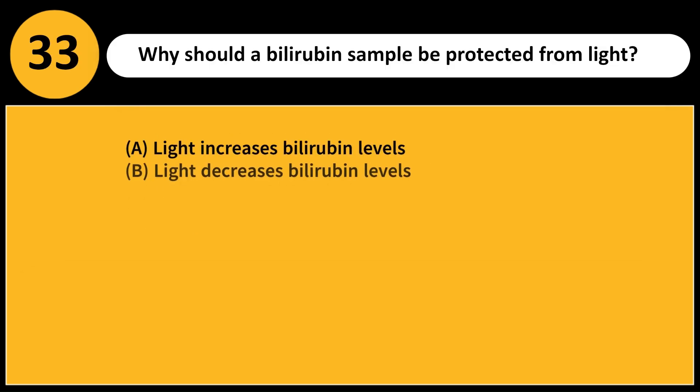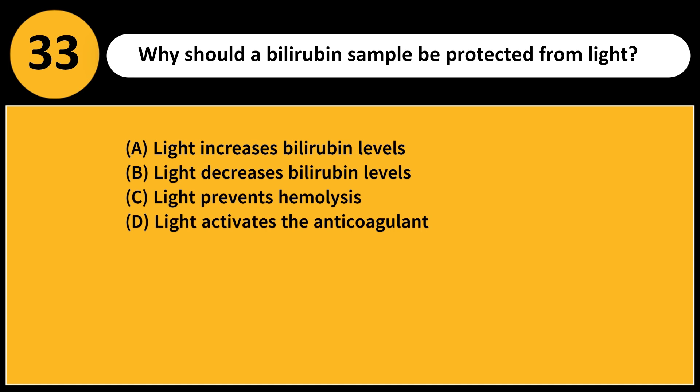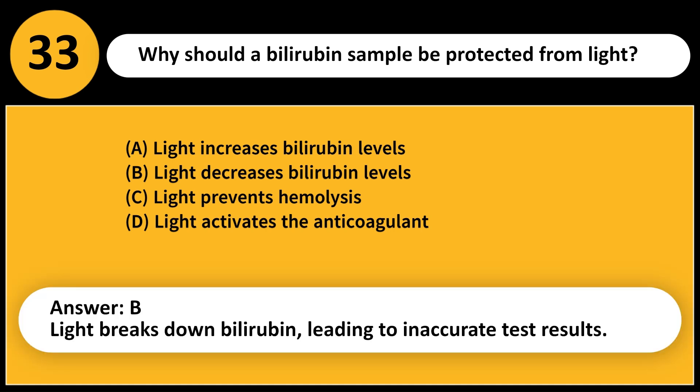Why should a bilirubin sample be protected from light? A. Light increases bilirubin levels. B. Light decreases bilirubin levels. C. Light prevents hemolysis. D. Light activates the anticoagulant. Answer: B. Light breaks down bilirubin, leading to inaccurate test results.